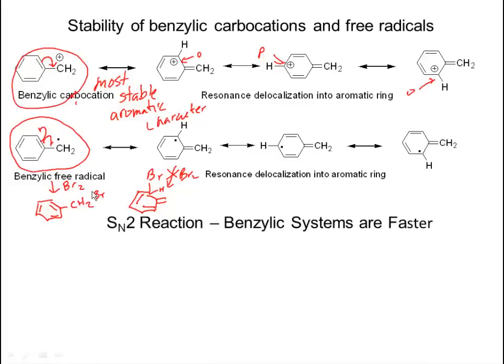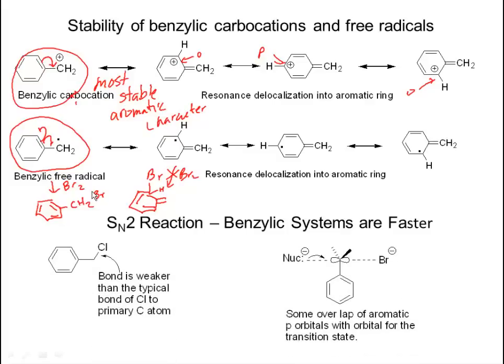SN2 reactions: benzylic systems are also accelerated here. Benzyl chloride has a weaker bond to chlorine than a typical primary carbon. Therefore, it's a little easier to break. Also, in the transition state for an SN2, the P orbital has overlap with the benzene ring when the system is in this geometry. Carbocations are stabilized by benzene rings, and SN2 reactions are accelerated when a benzene ring is right beside the center of reaction.